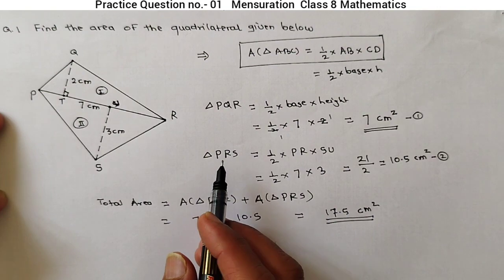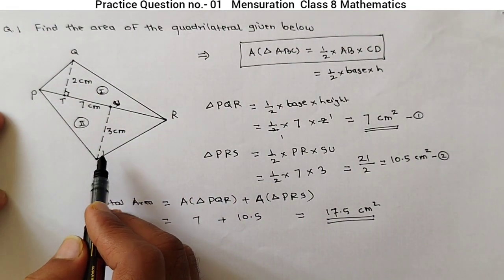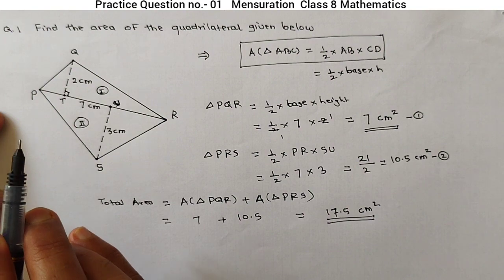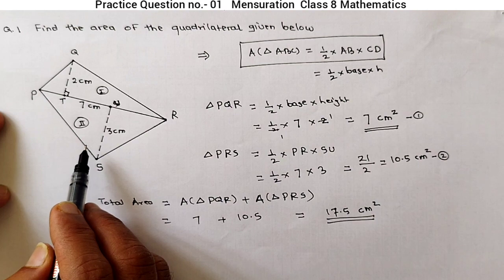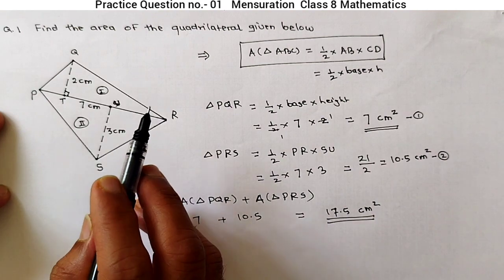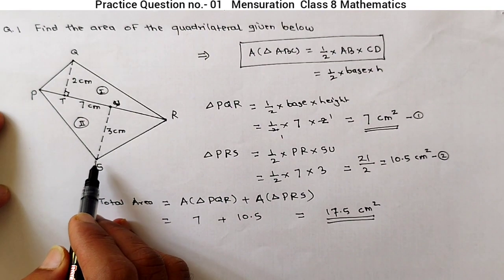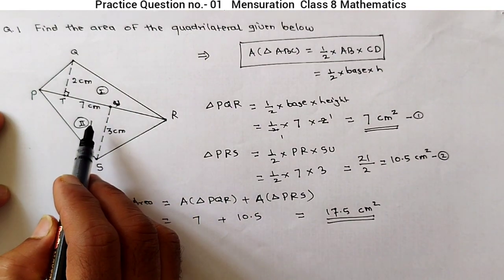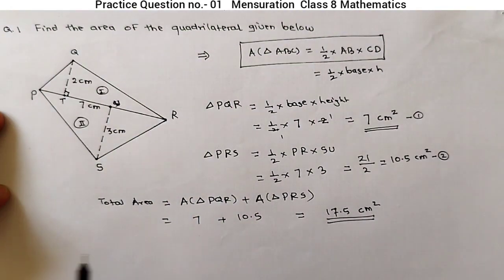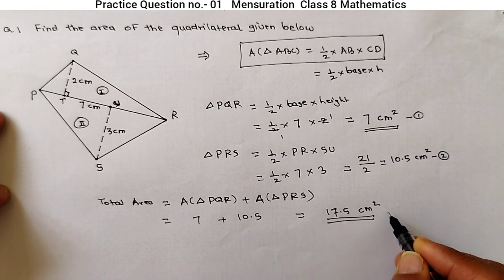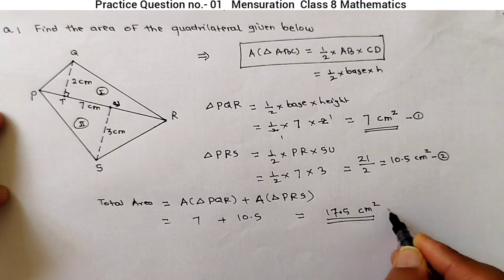It is very simple: if the base is given and the perpendicular distances are given, then we can calculate the area of the triangle. To calculate the area of a quadrilateral in mensuration, we divide it into two triangles, because a quadrilateral can be divided in two triangles. So the area of this quadrilateral is 17.5 cm².